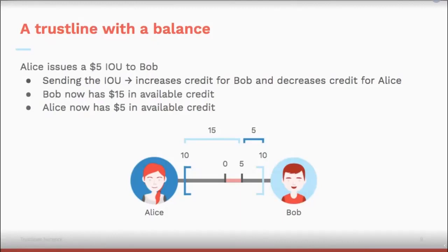So how do you use that sort of agreement to make a payment? Suppose Alice and Bob go out for drinks and Bob buys Alice's drink — now Alice owes Bob $5. Alice can pay Bob with credit over the credit line he has given her. She issues a $5 IOU to Bob, which increases Bob's available credit and decreases Alice's available credit. Bob now has $15 in available credit, and Alice has $5.